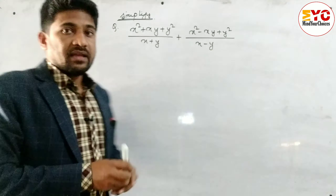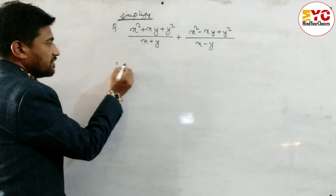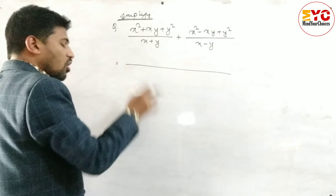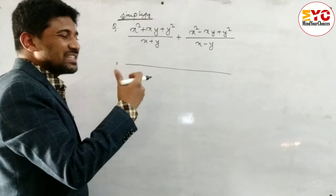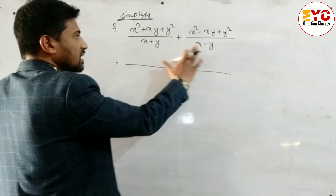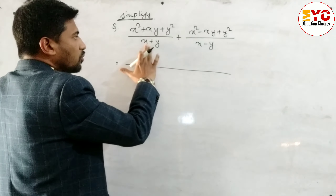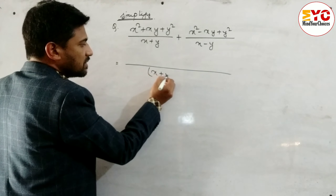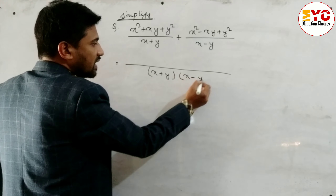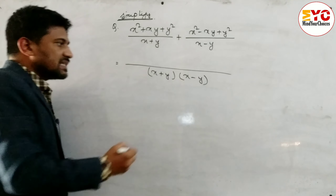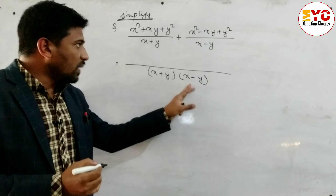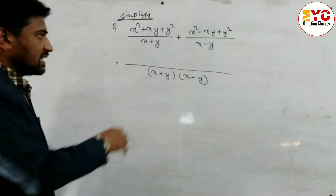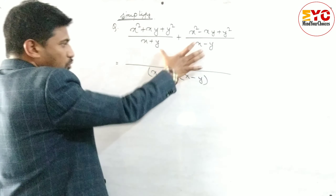Let's take a start. First of all, we have to take the LCM. While taking the LCM, we take the common as well as the remaining terms. Here both the terms are different — nothing common — so we write (x + y)(x - y). So the LCM is (x + y)(x - y).